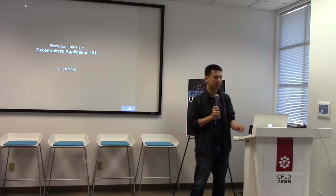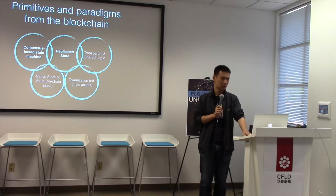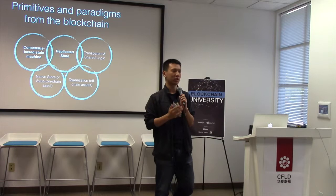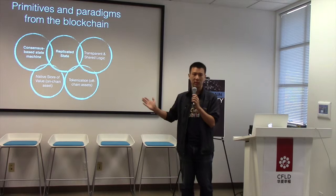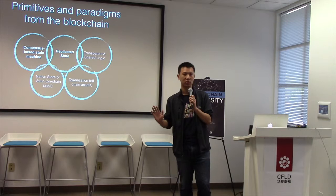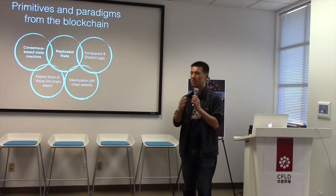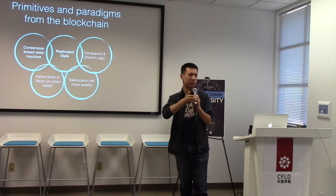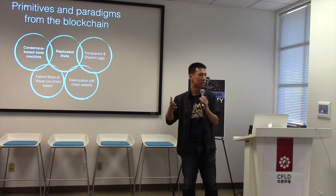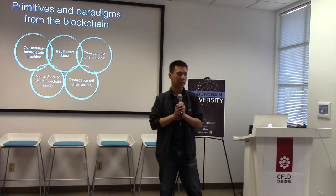Let's look at a few primitives that make the Bitcoin blockchain interesting. The first is a consensus-based state machine — it maintains a unified state, specifically the latest state of who owns how much Bitcoin, and manages transitions between states. The second property is that it's replicated across many machines, making it redundant and harder to reverse.